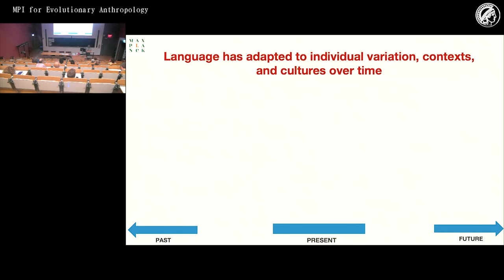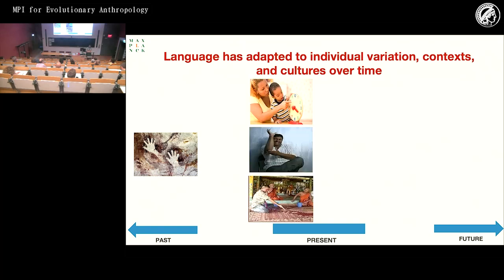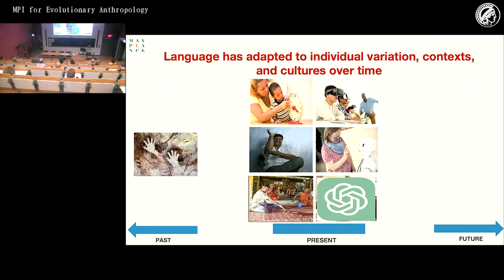So why does it matter? It matters if you think of language as an adaptive system. Language has adapted to individual variations, contexts, and cultures over time — in the past and in the present. It has adapted to all human societies around the world and is adapting to new technologies. It's only recently that we can use language with non-humans, and we have to see how our language practices will change as a result.